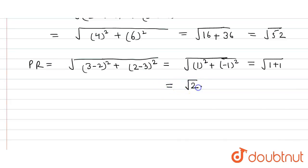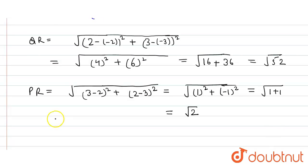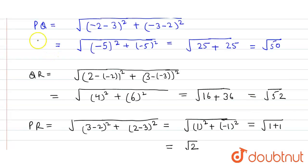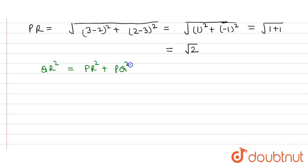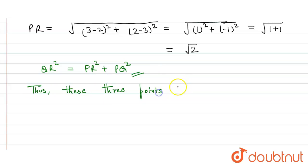From all three distances, we can verify that QR² = PR² + PQ², since 52 = 2 + 50. This satisfies the Pythagorean theorem, so all three sides satisfy the Pythagorean theorem. Thus, these three points form a right angle triangle.